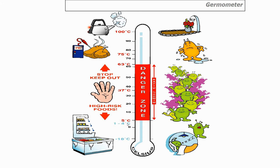Refrigeration temperature is 1 to 4°C. Above that we enter the temperature danger zone. Any high risk food kept in the danger zone has the potential for bacteria to grow to large numbers. The ideal temperature for bacterial growth is 37°C. Below about 5°C it's too cold for bacteria. They start to multiply slowly around 20-30°C. Above 37°C it's too hot — they stop multiplying and start dying around 50-55°C, and by 63°C they are all dead.